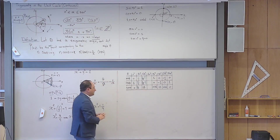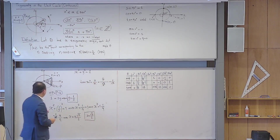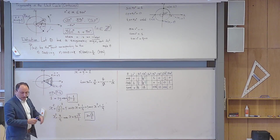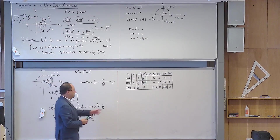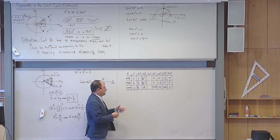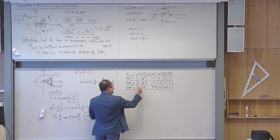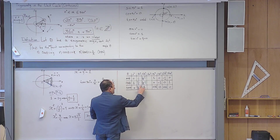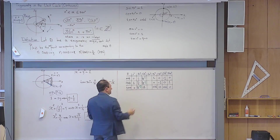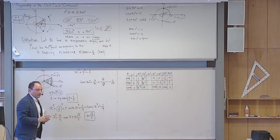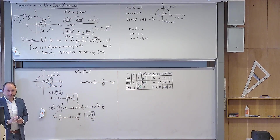For the tangent of 30 degrees, tangent is y over x, which is one-half divided by the square root of three over two. The two's cancel, leaving one over the square root of three. Using rationalization, this can also be written as the square root of three over three.